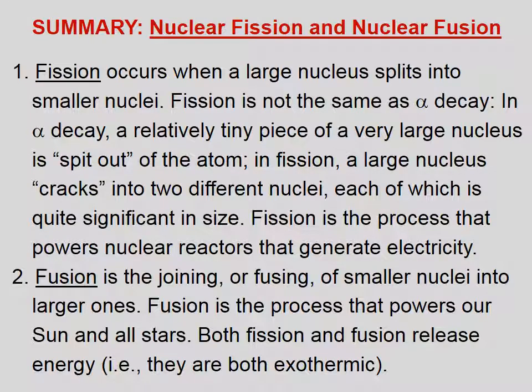Let's summarize. Fission occurs when a large nucleus splits into smaller nuclei. Fission is not the same as alpha decay—in alpha decay, a relatively tiny piece of a very large nucleus is spit out of the atom. In fission, a large nucleus cracks into two different nuclei, each of which is quite significant in size. Fission is the process that powers nuclear reactors that generate electricity.